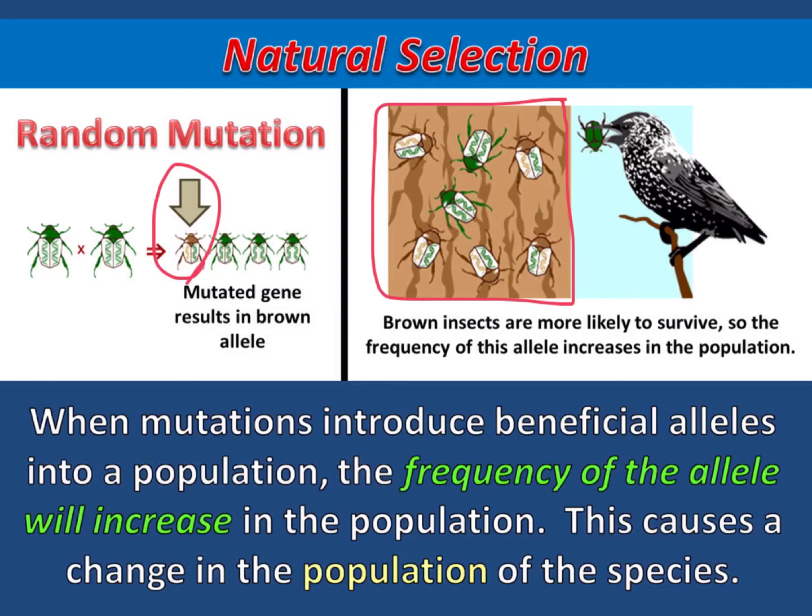Notice that in the picture to the right, more of the insects are brown than green because that allele helped them survive and reproduce. It is the inherited variation that was created by the mutation that allowed natural selection to work on this population.